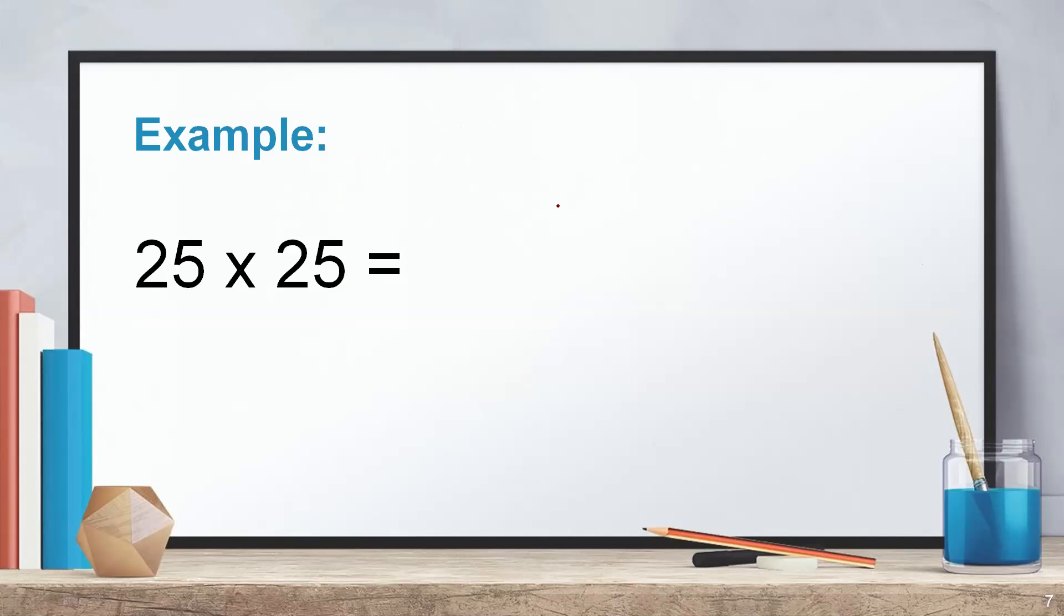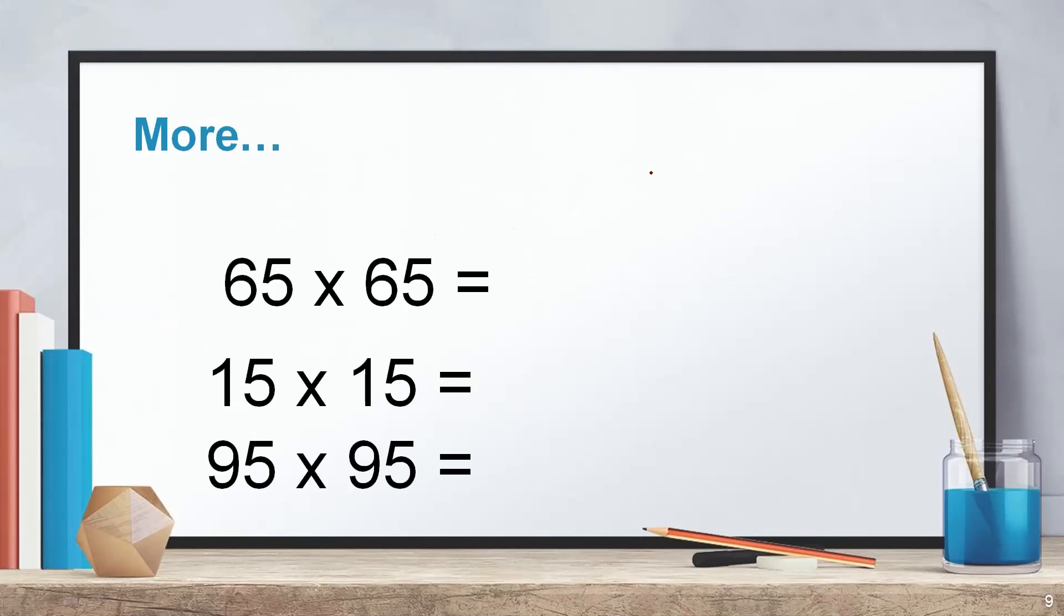Shall we do some examples? 25 times 25 means 2 into its succeeding number is 3. 2 times 3 is 6, then write 25. Want to solve more? I hope you will be quicker than me while solving the next set of questions. 45 times 45. 4 times 5 is 20, write 25 at the end. Then 65 into 65 means 6 times 7 is 42, write 25 at the end.